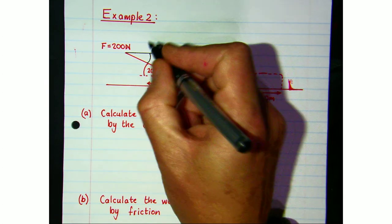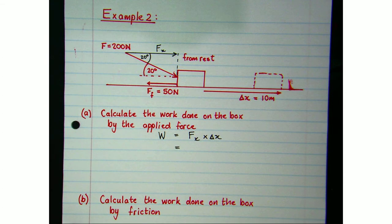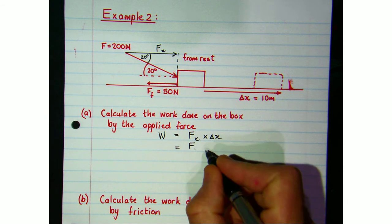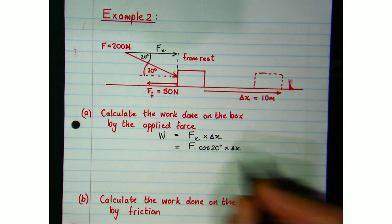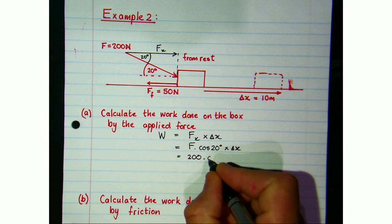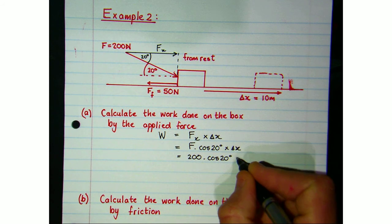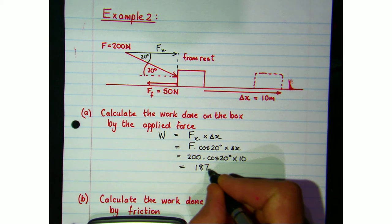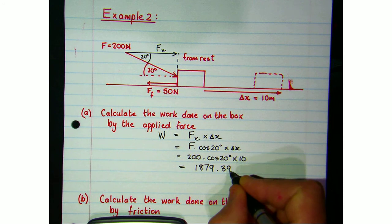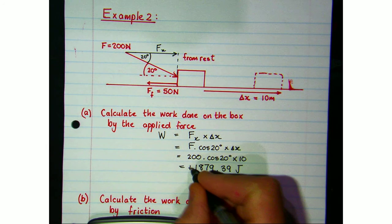Using alternate angles, the angle here is also 20°, which means Fx equals F cos 20°, multiplied by the displacement. F this time is 200 newtons, multiplied by cos 20°, multiplied by the 10 meters. Putting that into the calculator gives approximately 1879.39 joules of work done by the applied force — and again that's positive work, adding to the mechanical energy of the box.